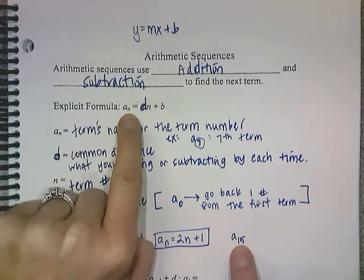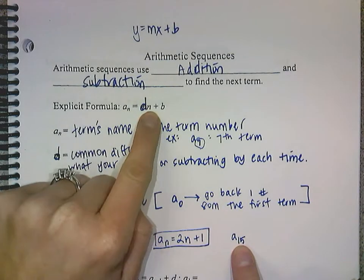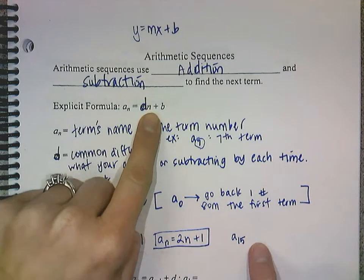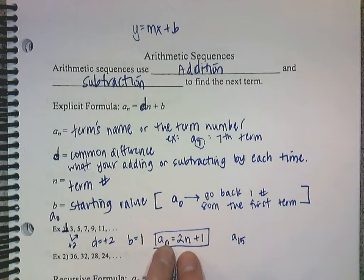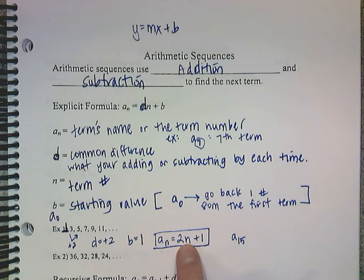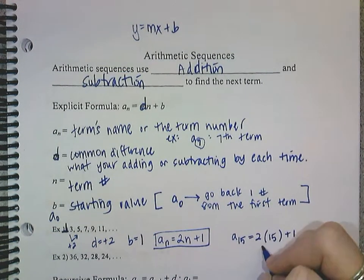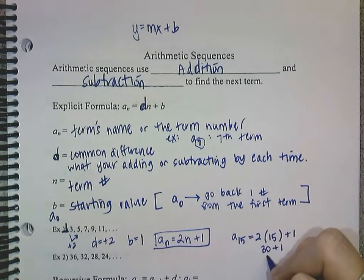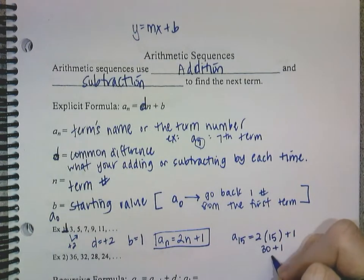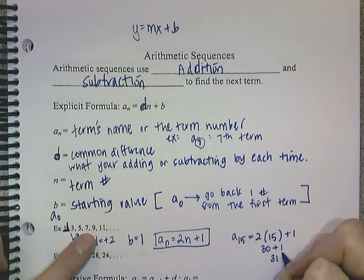So we're going to figure out the 15th term. So the n, I'm replacing it with 15, which means in my formula I need to replace my n as well with my 15. So again, n goes out, 15 goes in its spot, and then I take this n out and I put 15 in this spot. So I have 2 times 15 plus 1. So 2 times 15 is 30 plus 1. So that means that my 15th term for this sequence is going to be 31.